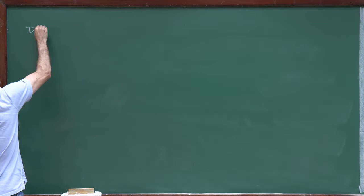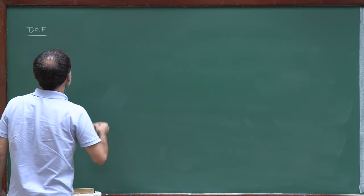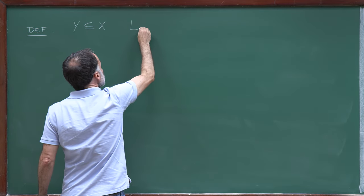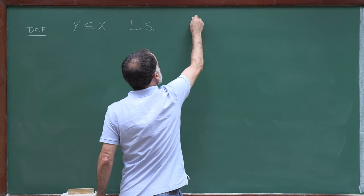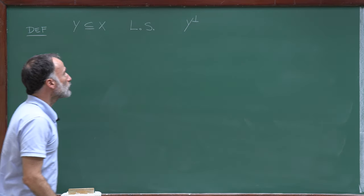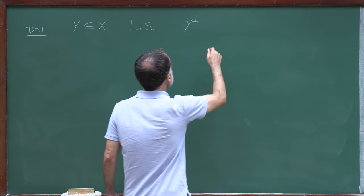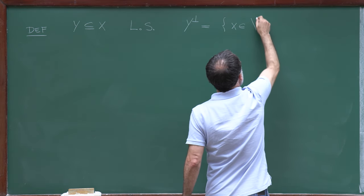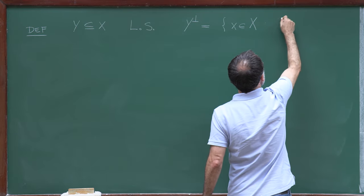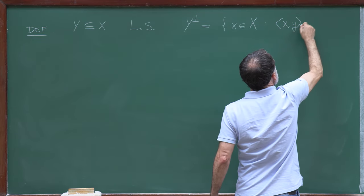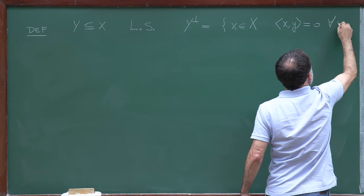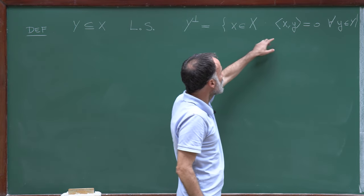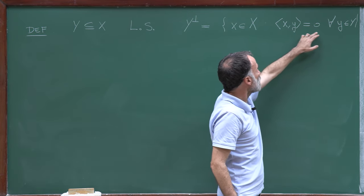Now let me introduce a definition. Let Y be a linear subset of X. Then I define Y orthogonal, written Y⊥, as the set of all points X in X which are orthogonal to Y — that is, the scalar product ⟨X, Y⟩ = 0 for all Y in Y. These are all elements of X which are orthogonal to all elements of Y.